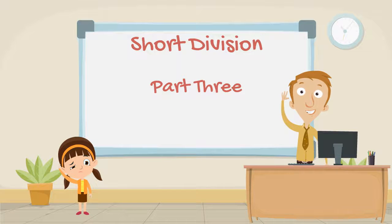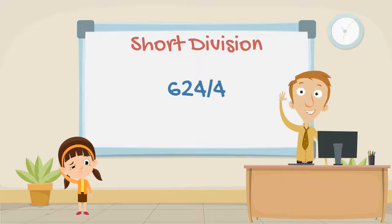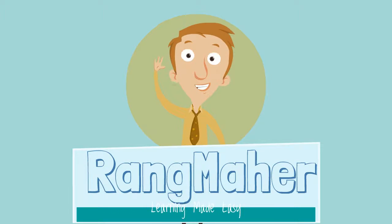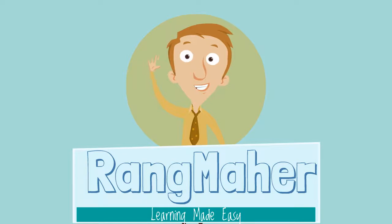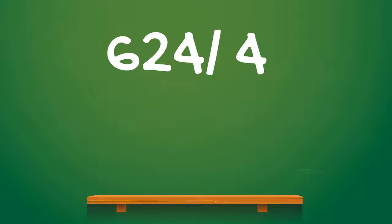Welcome back. Now that we know how to do the simple short division sums, let's move on to something a little bit more difficult. Let's have a look at a sum like this one. First let's take a look at how the sum is written. Remember in the last video we learned that there were at least four different ways of writing a division sum. This is just another one of those ways. So first let's rewrite this sum in a way that we know — the bus stop way.